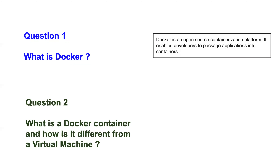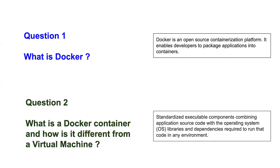Now let's understand what a Docker container is and how it's different from a virtual machine. A container can be considered as a standard executable component — a package of your application source code, the dependencies required to run it, and the OS libraries required. With a virtual machine you use a complete operating system, whereas with a Docker container you only use the libraries required. This follows a concept called shared libraries.